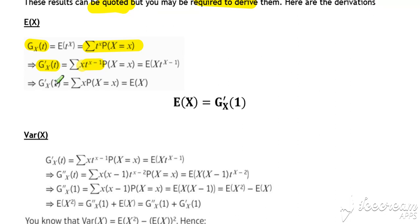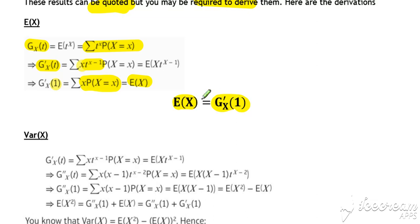If we substitute 1 in place of t, then we get 1 to the power of something, which is just 1. So we get x times the probability of x, which is the same as our expected value of x — that's the expected value formula, x times p(x). Therefore, the expected value of x equals g'(x) evaluated at 1. That's your derivation for the expected value of x.